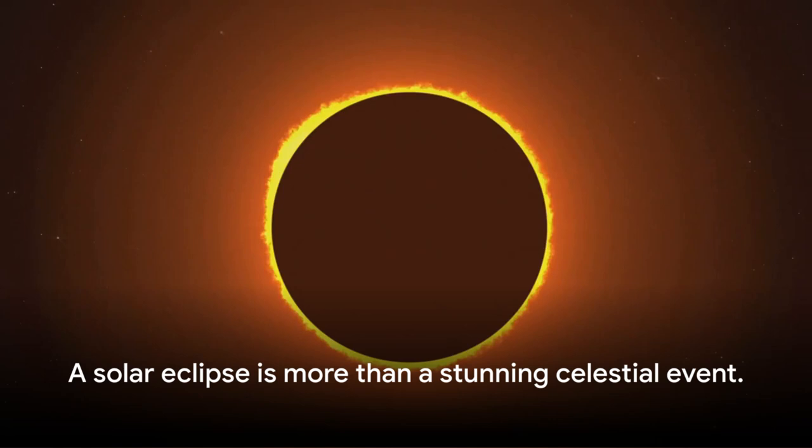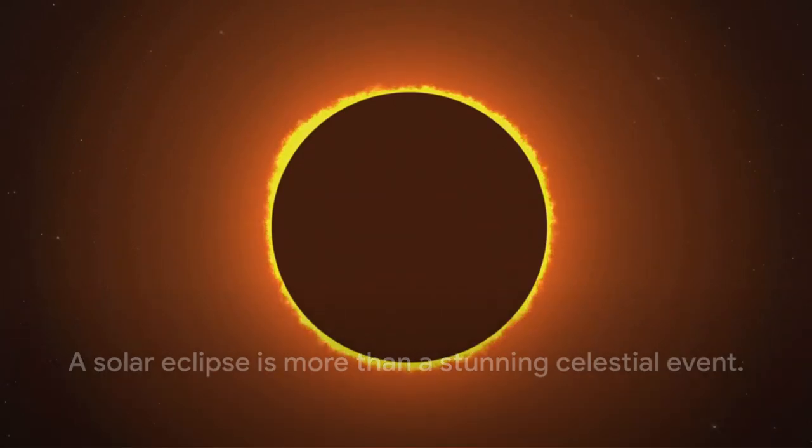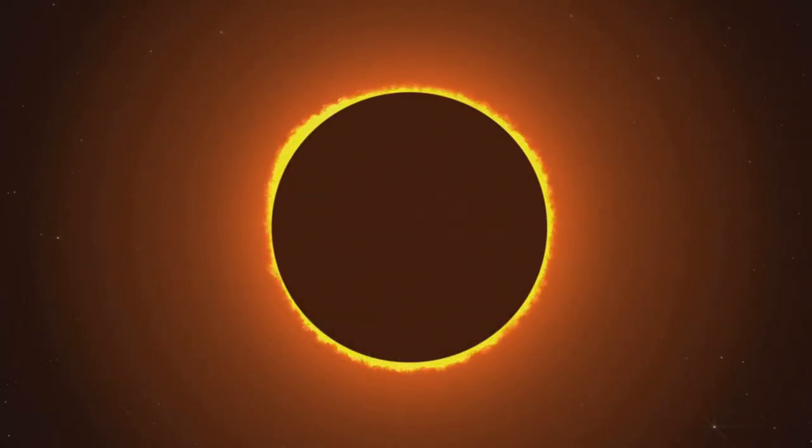So, what have we learned today? A solar eclipse is more than a stunning celestial event. It's a temporary disruptor of our weather. It cools the Earth's surface, changes wind patterns, and even impacts animal behavior.